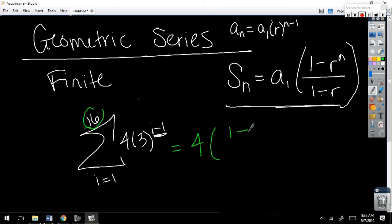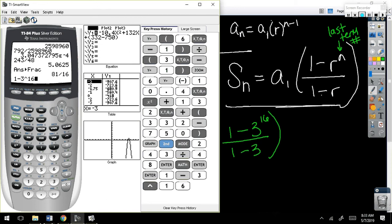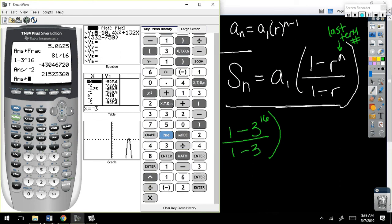All right. So the sum here, what's the first term? 4. 1 minus. Now, I need R to the N. So, R is 3. What is N? 16. Last term number. Okay. So, 16 divided by 1 minus R. It's a calculator problem. So, I'm going to do the top first. 1 minus 3 to the 16th. Divided by negative 2. Times. What's outside? 4.